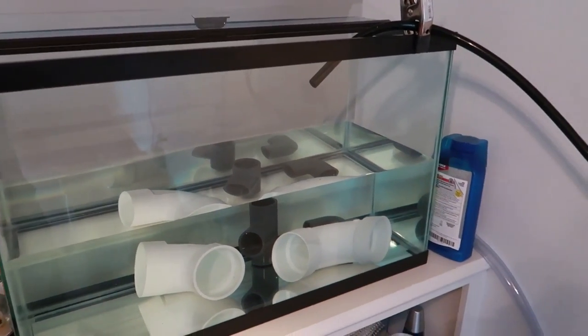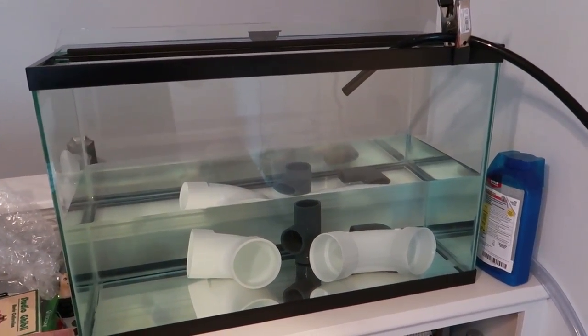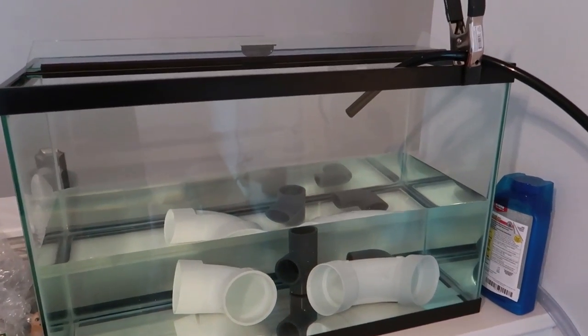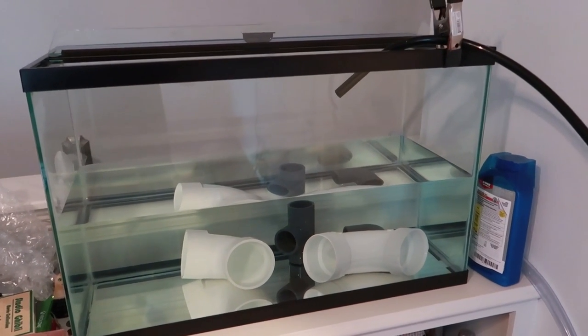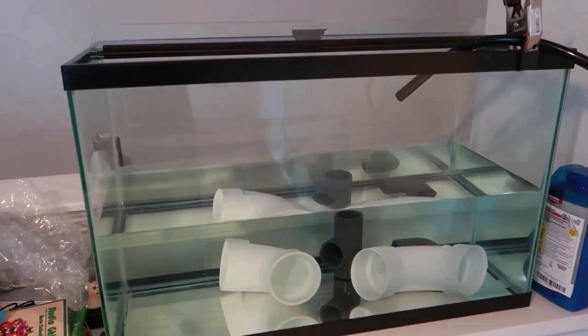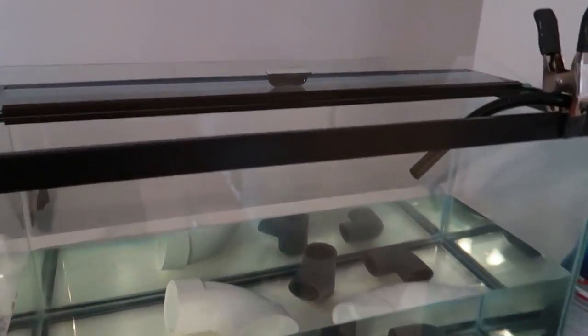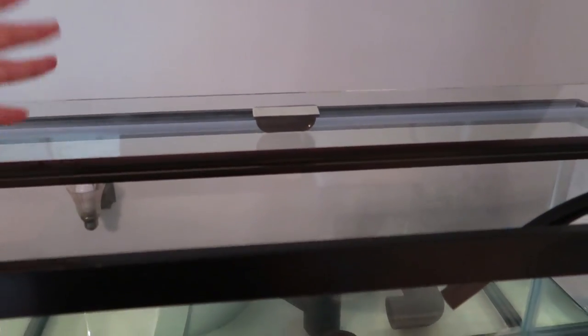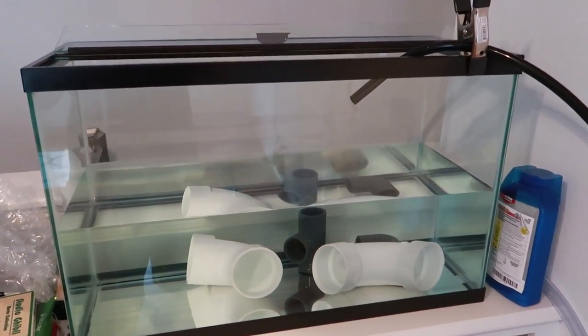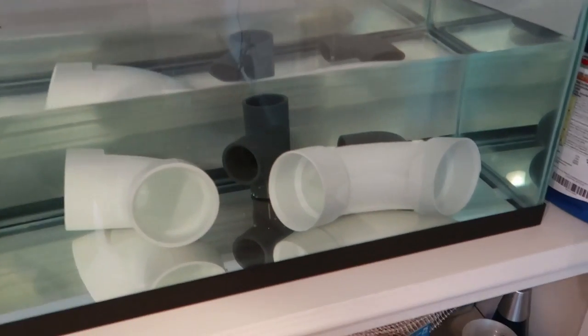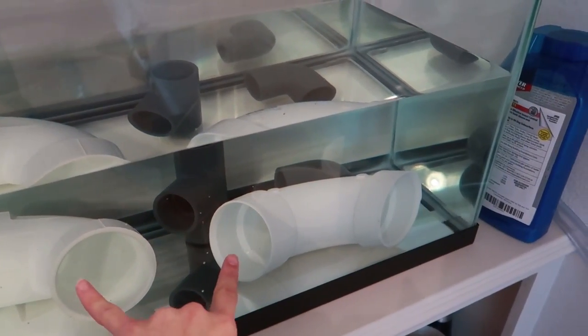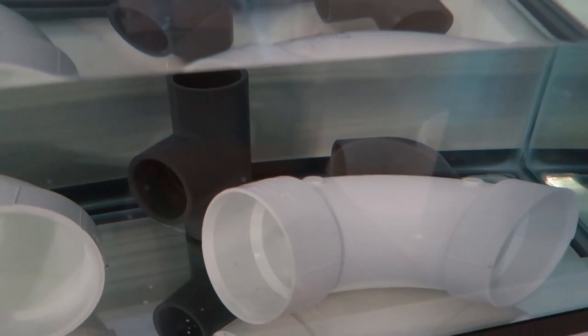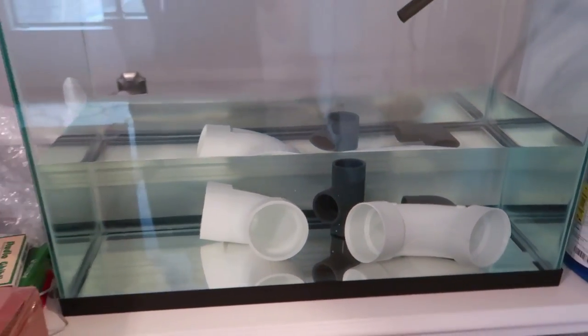First, this is a 29 gallon Aqueon tank. I got it from a co-worker completely free. Super excited about that. However, you can definitely get them at the Petco dollar per gallon sale or on Craigslist. I went ahead and got a Versa Aqueon lid separately. It's just glass. It prevents evaporation, which is really important in salt water so we keep the salinity stable. With this, I decided to use some leftover pieces of 3 or 4 inch PVC just to give the fish an opportunity to hide and feel a little bit more secure.